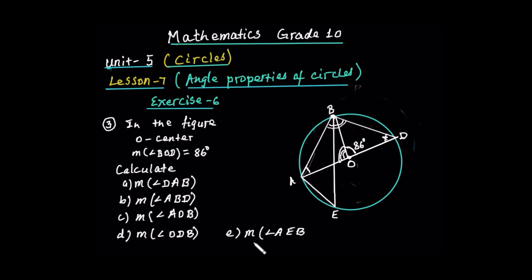Subtended by arc AB. The measure of angle AEB — major of angle AEB. Given information: AD is a diameter, because it passes through the center O.